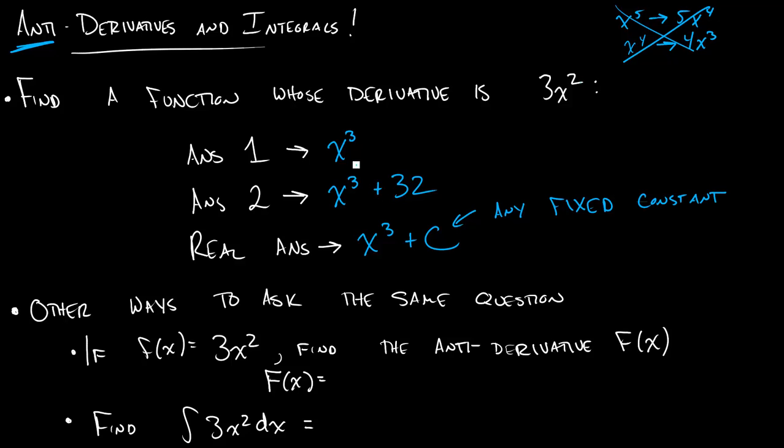The way you might see this problem actually given in WebWork is something along the lines of: if little f(x) was 3x², find the antiderivative big F(x). And all that we want you to write here is, well, big F(x) is going to be x³ plus C. Because, as we were just saying, if I take the derivative of this, I will get little f(x).